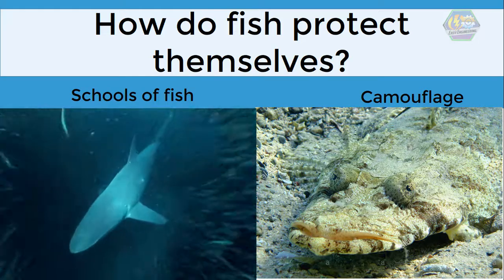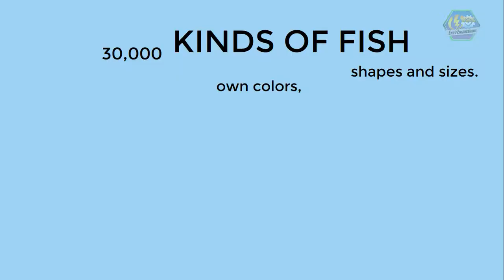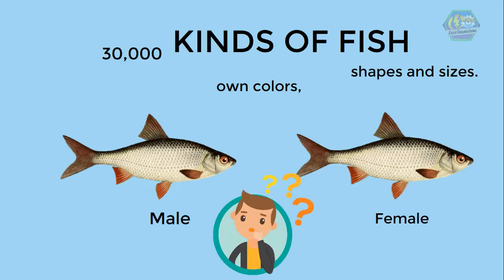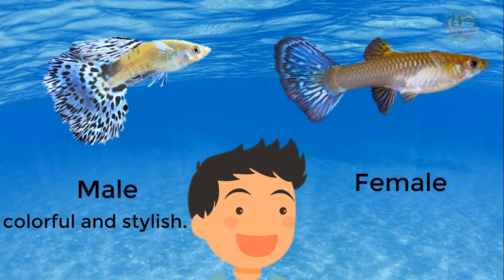Some fish even have fins and scales that look like plants, so you could see them blending into coral reefs. There are over 30,000 different kinds of fish, all of which have their own colors, shapes, and sizes. In some species it is difficult to tell male from female because there are no visible signs, but in some species males and females look different — males are sometimes more colorful.